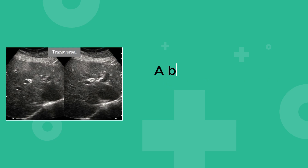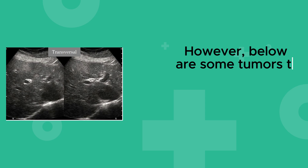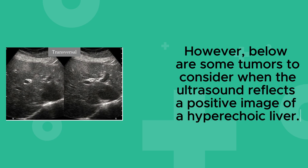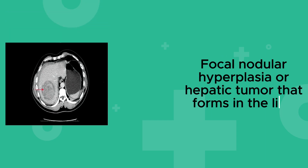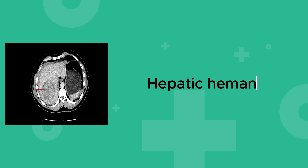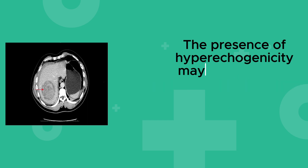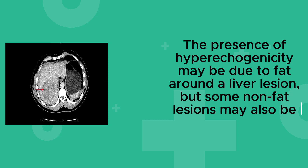Benign lesions: a benign tumor has no significant effect on the body. However, some tumors to consider when the ultrasound reflects a positive image of a hyperechoic liver include focal nodular hyperplasia, a hepatic tumor that forms in the liver, and hepatic hemangioma. The presence of hyperechogenicity may be due to fat around a liver lesion, but some non-fat lesions may also be echogenic.